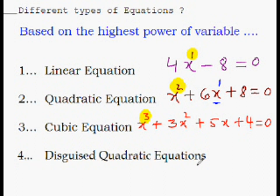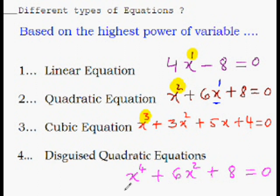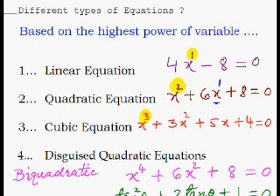The fourth type is disguised quadratic equations. For example, a bi-quadratic equation looks different but is actually a quadratic equation working undercover — like James Bond. Similarly, there are trigonometric quadratic equations which are also quadratic equations in disguise.